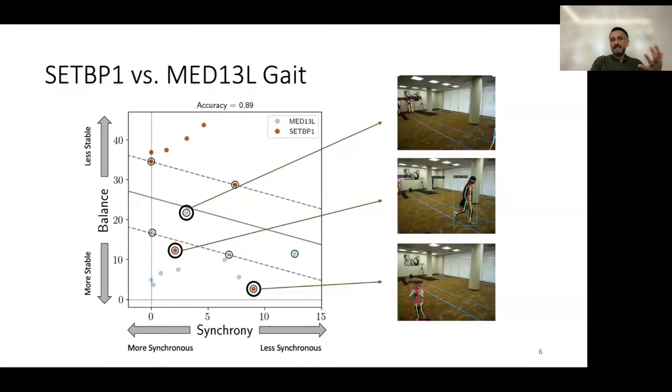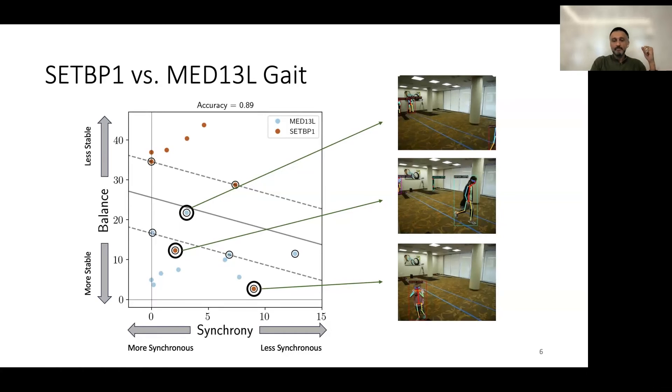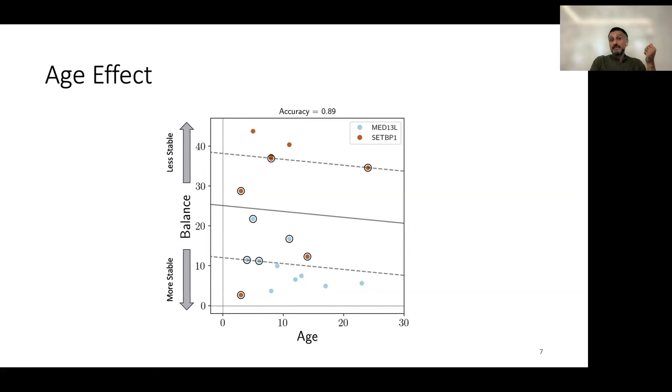So overall, we can see that using this methodology and using these two types of measurements, meaning our specific way of measuring balance and synchrony, we are able to see very interesting trends and extract very interesting information. We also wanted to make sure that this particular effect that we see in balance specifically is not due to age. So we did a very preliminary analysis on age. And as you can see, age is not a big factor, meaning that across various ages, you still have this separation of these two groups based only on their balance score.